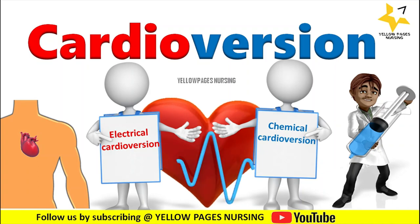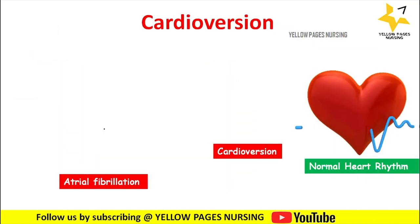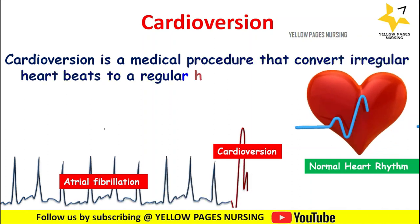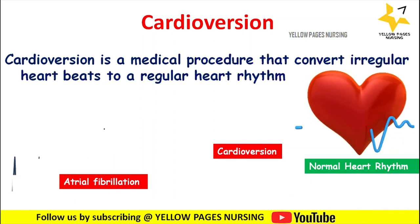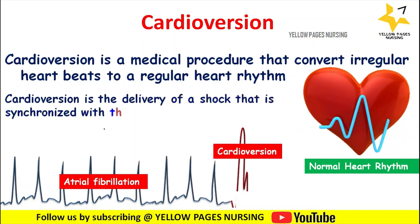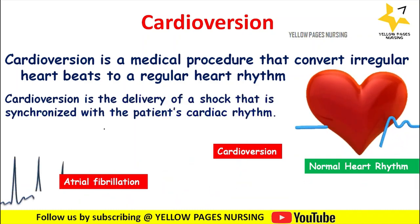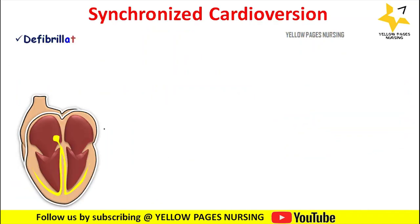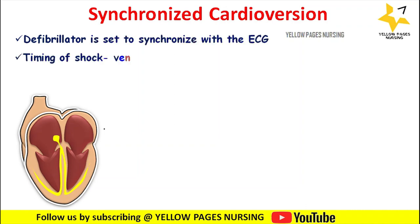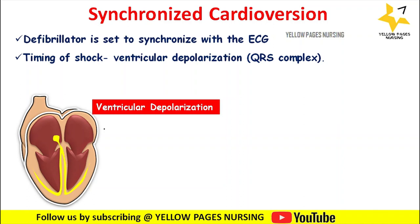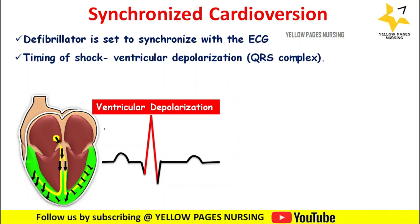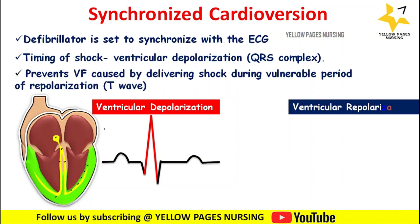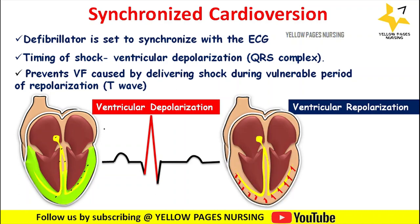What do we mean by cardioversion? Cardioversion is a medical procedure that converts irregular heartbeats to a regular heart rhythm. It is the delivery of a shock synchronized with the patient's cardiac rhythm, and that is where it differs from defibrillation. The defibrillator is set to synchronize with the ECG, and the shock is given during ventricular depolarization, which is reflected by the QRS complex in the ECG.